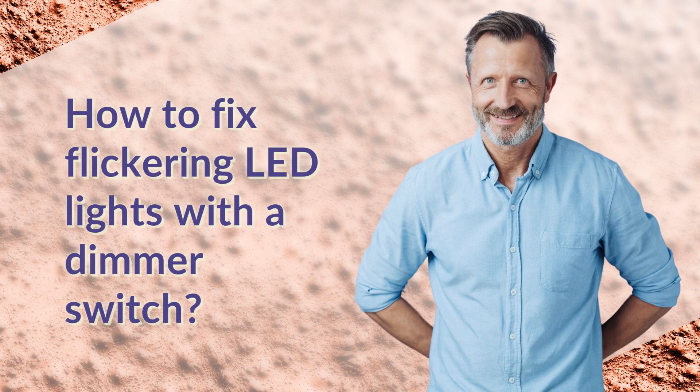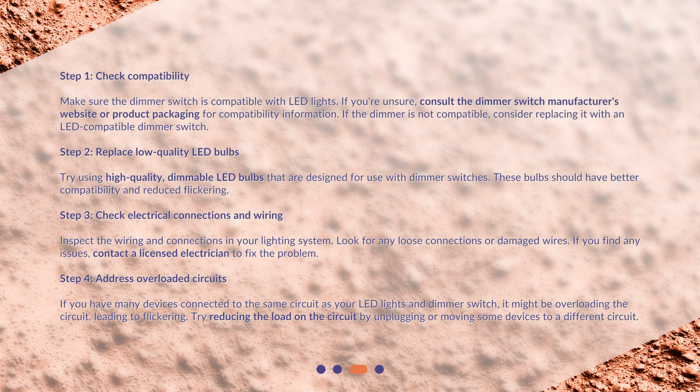How to fix flickering LED lights with a dimmer switch? Step 1: Check compatibility. Make sure the dimmer switch is compatible with LED lights. If you're unsure, consult the dimmer switch manufacturer's website or product packaging for compatibility information. If the dimmer is not compatible, consider replacing it with an LED-compatible dimmer switch.